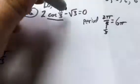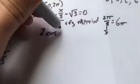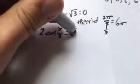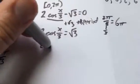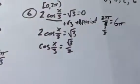Well, let's just see what we can do first. Add root 3 to both sides. So this is root 3 divided by 2. Great.